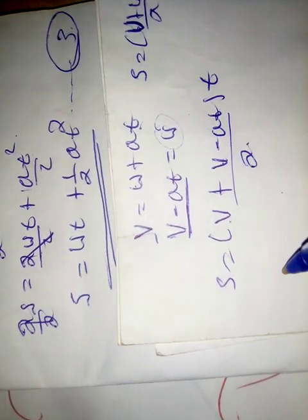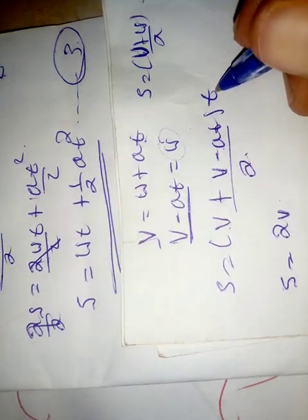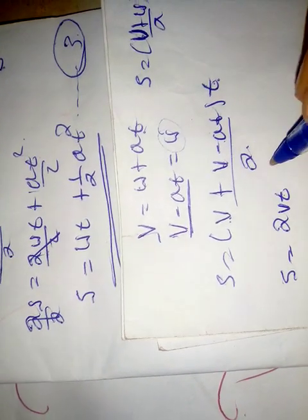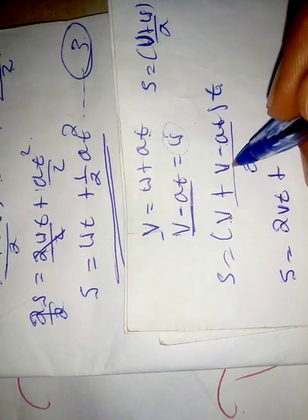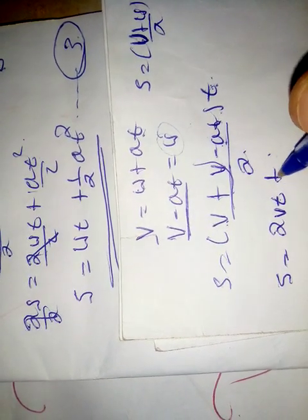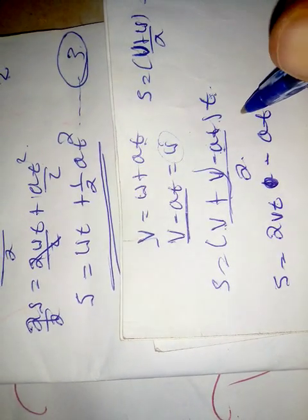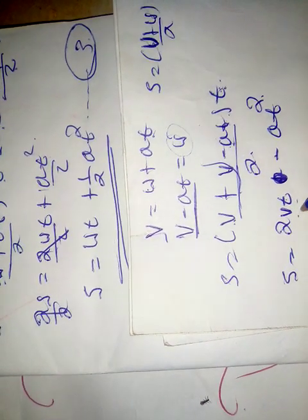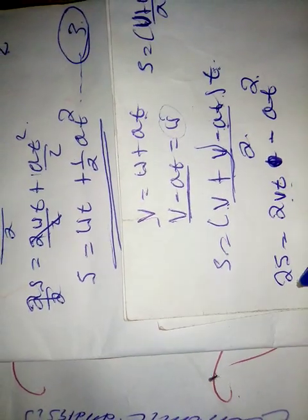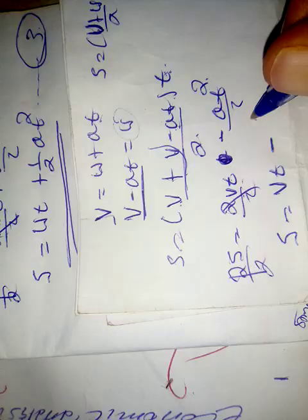S is equal to V plus V. S minus V times T. This is VT minus half AT squared. We have to say that 2S is equal to V squared. This is equal to VT minus half AT squared.